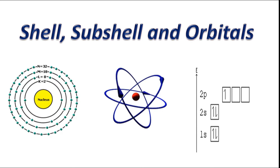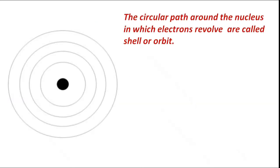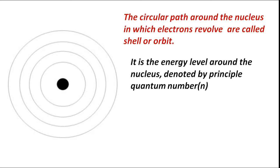Shell, Subshell and Orbital. The circular path around the nucleus in which electrons revolve are called shell or orbit. It is the energy level around the nucleus denoted by principal quantum number N.